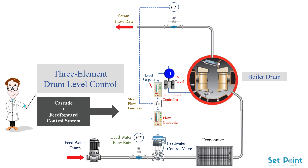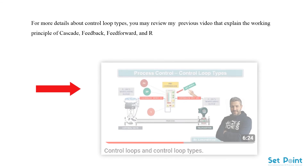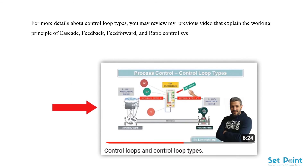For more details about control loop types, you may review my previous video that explained the working principle of cascade, feedback, feed forward, and ratio control systems, as I left the link for you in the description box of this video.